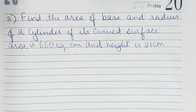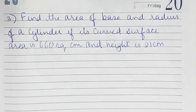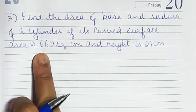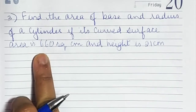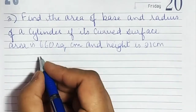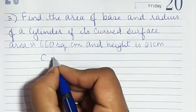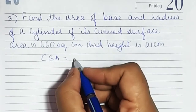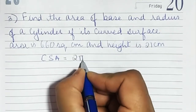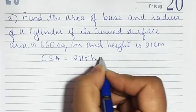Now the third sum: Find the area of base and radius of a cylinder if its curved surface area is 660 and height is 21. We have the curved surface area, so we can find the radius from it because the curved surface area formula has radius. The curved surface area formula is 2πrh.